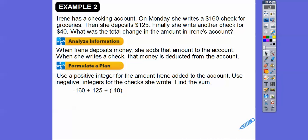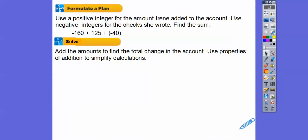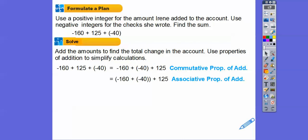Use positive integers for the amount that she deposited or added to the account, and negative numbers for the checks that she wrote. She wrote the check for $160, so that's minus $160. Then she deposited, so that's plus $125. And then she wrote another check, so that's minus $40. Now I'm going to do the commutative property of addition. I'm going to commute these two numbers around the addition sign so I can put the negatives together. Now I'm going to associate these two numbers together. Negative $160 plus negative $40 is negative $200. Negative $200 plus $125 is negative $75. That means the amount in the account decreased by $75.